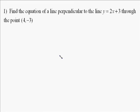The following question asks us to find the equation of a line perpendicular to the line y equals 2x minus 3 through the point (4, -3).